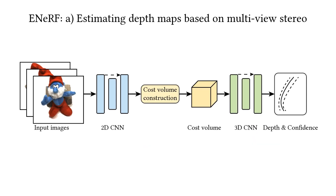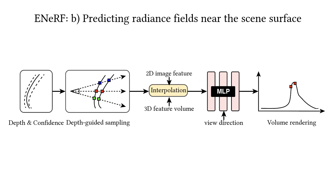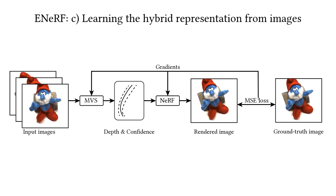Specifically, our method first estimates the depth map of the target view based on the multi-view stereo method. Then, we predict radiance fields near the scene surface. To generalize across different scenes, our method takes 2D image features and 3D volume features from the multi-view stereo network as input. The whole process is fully differentiable, and we jointly learn the depth prediction network and generalizable radiance fields from images.